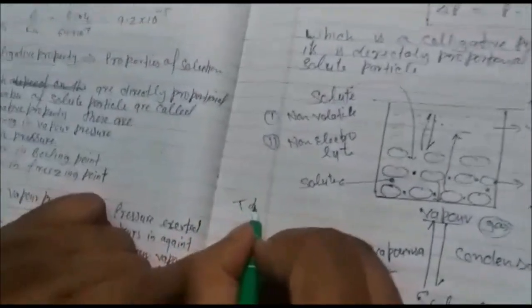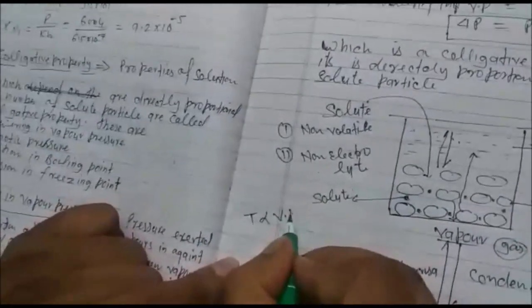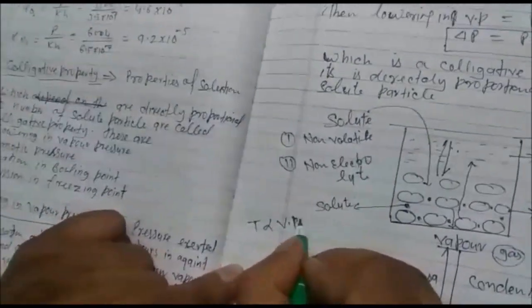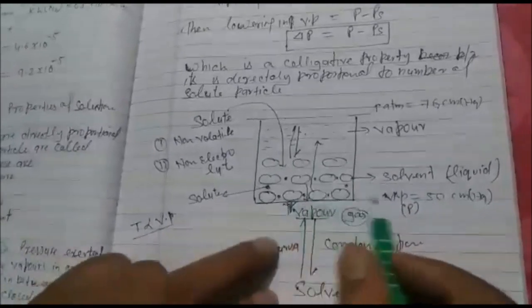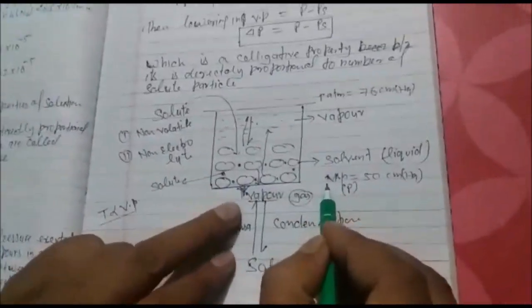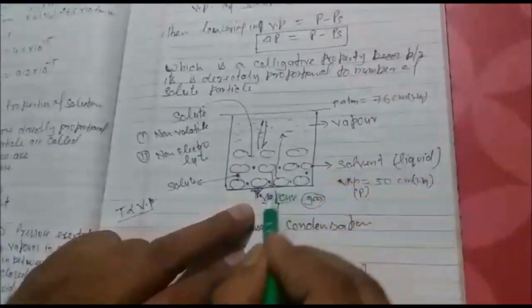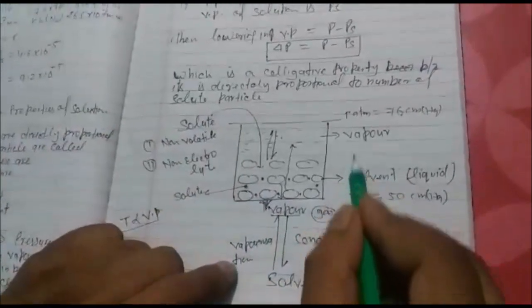As you know, temperature is directly proportional to vapor pressure. So when you start heating, vapor pressure also increases. We are adding temperature, so vapor pressure increases.